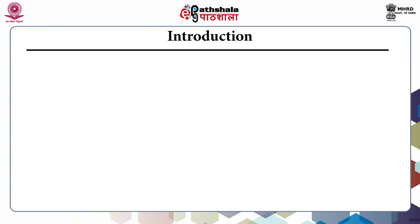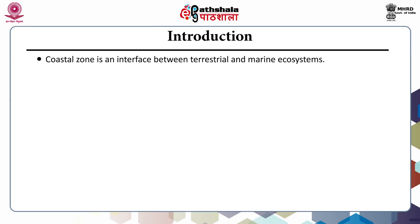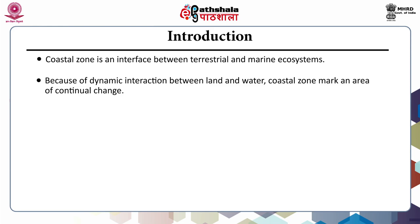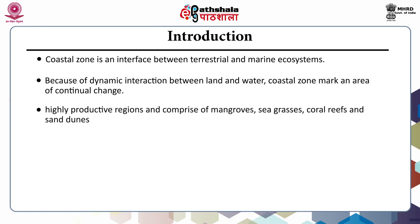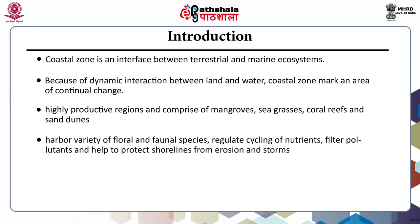Starting with the introduction, what is meant by the term coastal zone? It is an interface between terrestrial and marine ecosystems, that is between land and water. Because of the dynamic interaction between land and water, coastal zones mark an area of continual change. These are highly productive regions and comprise of mangroves, sea grasses, coral reefs and sand dunes. They harbour a variety of floral and faunal species and also regulate cycling of nutrients, filter pollutants and help to protect shorelines from erosion and storms.